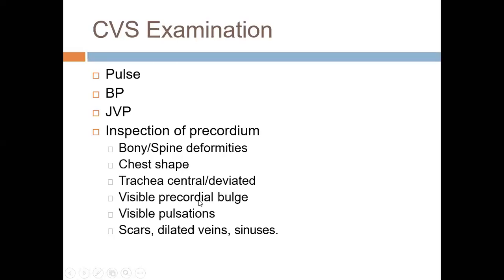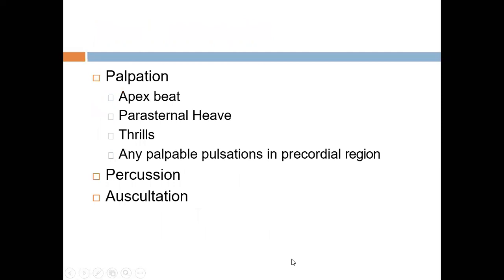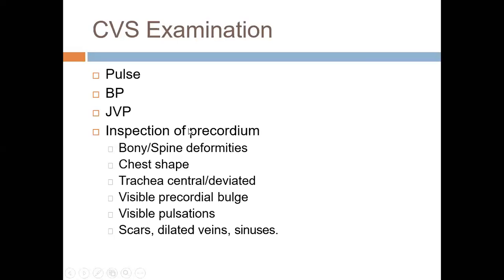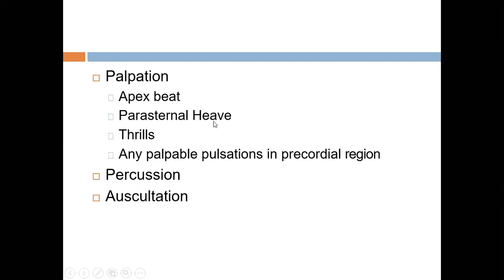For inspection of the chest, look for four things: deformity, pulsation, scar, and discoloration — this covers everything. For palpation, examine three things: apex beat, heave (parasternal heave), and thrill — this completes palpation. Percussion is not important in cardiac examination. Auscultation is very important and will be covered thoroughly later.